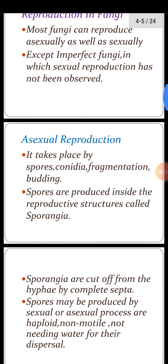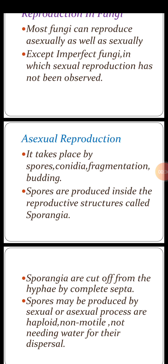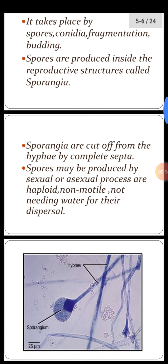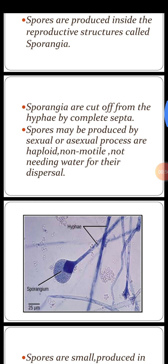Asexual reproduction takes place by so many structures: spores, conidia which are asexual spores, fragmentation — formation of small pieces or fragments — and formation of outward buds, which is called budding. Spores are produced inside reproductive structures called sporangia, as shown in the picture, in which spores are present.